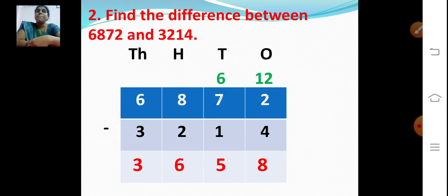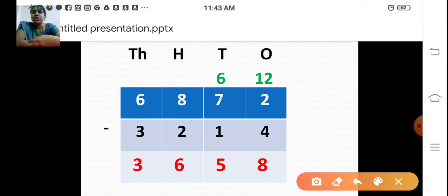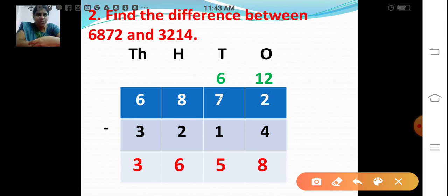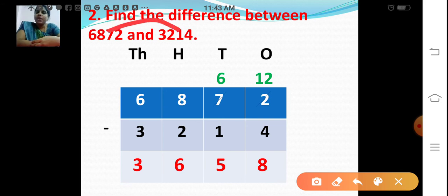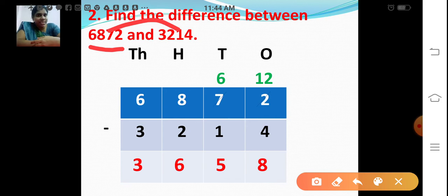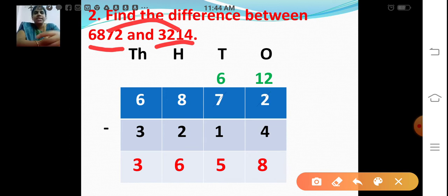Now find the difference between 6,872 and 3,214. What do you mean by difference? Subtraction — the answer we get after subtracting is called the difference. So we are going to subtract these two numbers. Write the numbers in the exact places: 6,872 is the minuend — 2 in ones, 7 in tens, 8 in hundreds, 6 in thousands. And 3,214 is the subtrahend — 4 in ones, 1 in tens, 2 in hundreds, 3 in thousands.